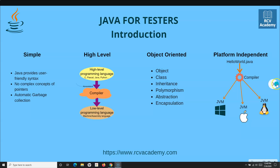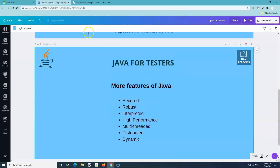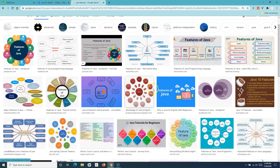These are key concepts about the introduction of Java. If you want to learn more features — it is secured, robust, interpreted, high-performance, multi-threaded, distributed, and dynamic. I'll try to cover these as we go along where they fit in with Selenium WebDriver. But if you're curious, just go to Google and search for 'Java features' and you'll get a lot of information.